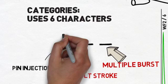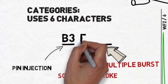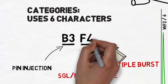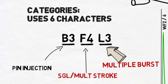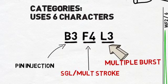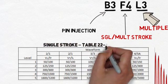In this example, we see that B3 is the waveform set and level. F4 is the single stroke and multiple stroke waveform set and level, with L3 being the multiple burst waveform set and level. Looking at waveform set F for single stroke and multiple stroke, we need to test to waveforms 3 and 5A.